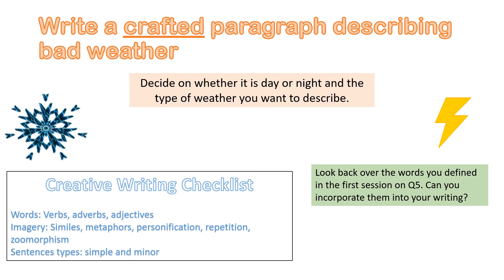Here's your task for today, folks: write one paragraph that is super crafted and well thought through. You're going to have to decide whether you want it to be day or night, and the type of weather you want to focus on. There's a little checklist at the bottom. I've also attached a document with lots of different words and phrases you might use to describe different types of weather — feel free to borrow these ideas and incorporate them into your own paragraph. You don't need to submit this to me, but as ever, I'm more than happy to mark something if you want me to have a look at it. Hope everyone's okay.